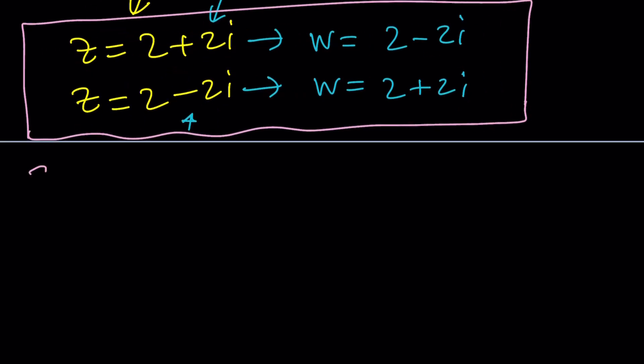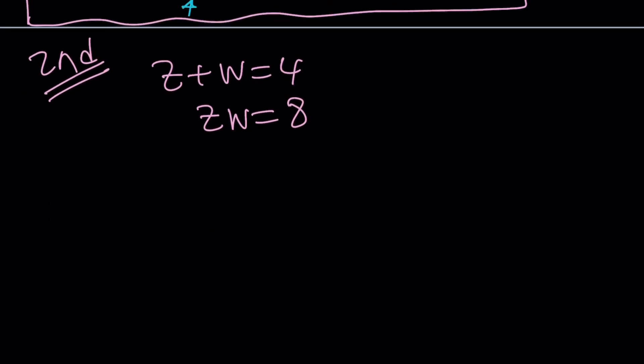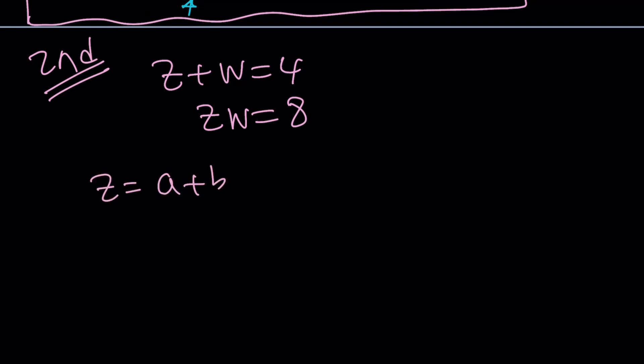Second method. So and this is when we're going to talk about it. So here's what I'm going to do one more time. Our system is z plus w equals 4 and zw equals 8. Now z and w must be conjugates. So if z is equal to a plus bi then w must be a minus bi.